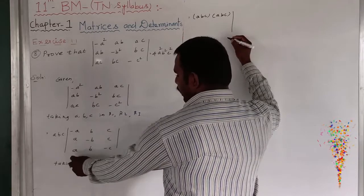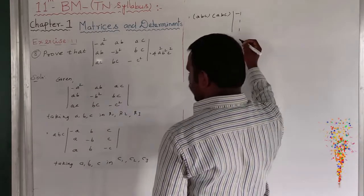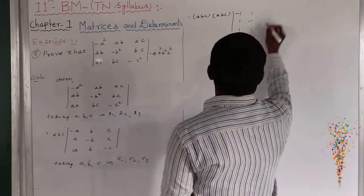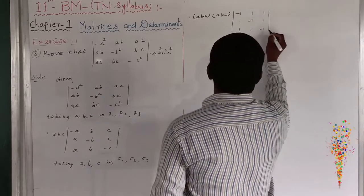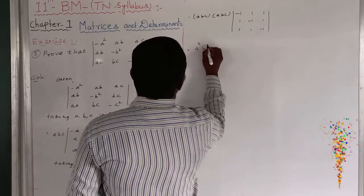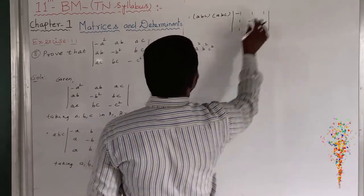Taking a from column 1 gives minus 1, 1, 1. Taking b from column 2 gives 1, minus 1, 1. And taking c from column 3 gives 1, 1, minus 1. The product gives a squared, b squared, and c squared.